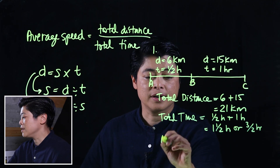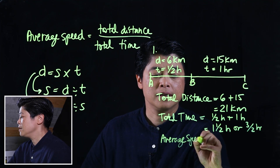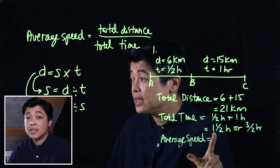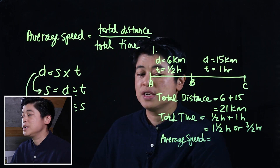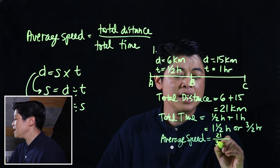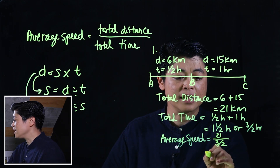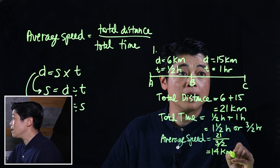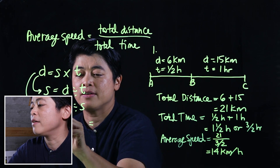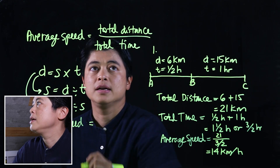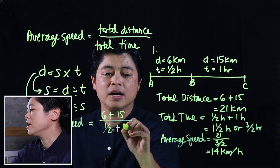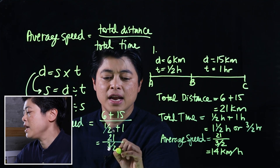Finally, the average speed: one and a half can also be written as 1.5 — it doesn't really matter which you prefer. The average speed is the total distance 21 divided by three-halves or one and a half. If you put that in your calculator, that's 14 kilometers per hour.